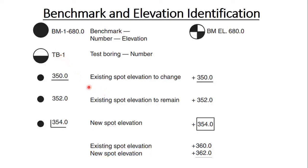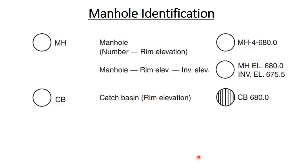For spot elevations, you can note them on the site plan. If you underline the spot elevation value, it means it needs to be changed from the existing value. If it is not underlined, it will remain the same. A separate symbol is used for new spot elevation. So on the site plan you can show both existing spot elevation, for example 360, and new spot elevation, for example 360.